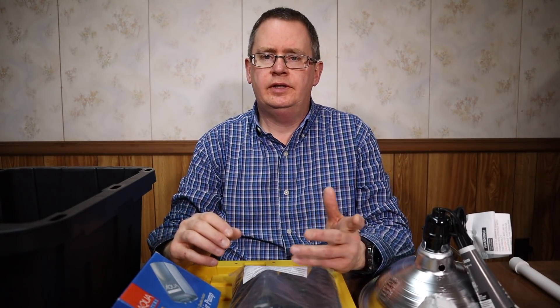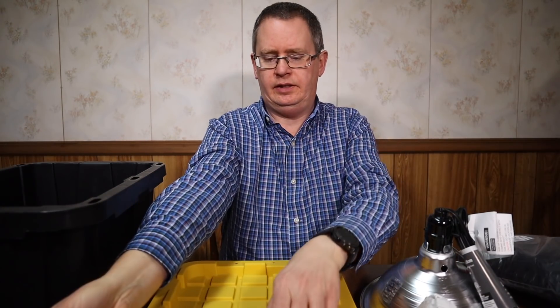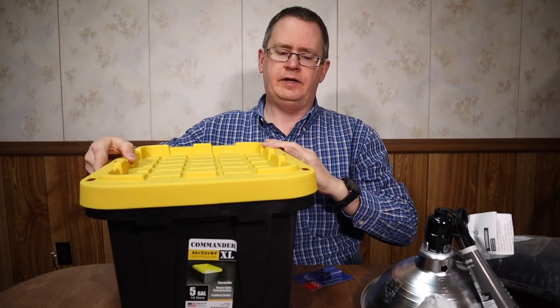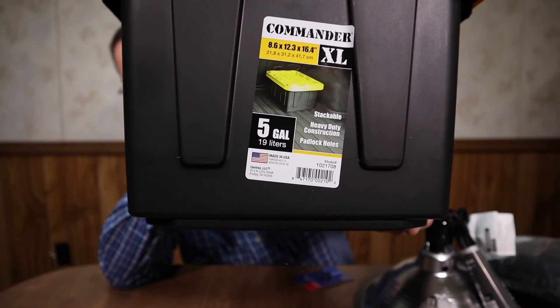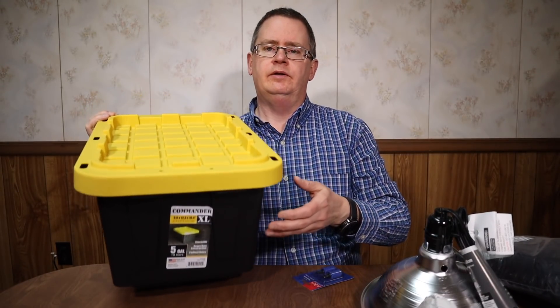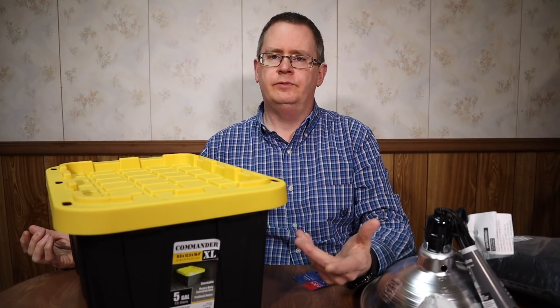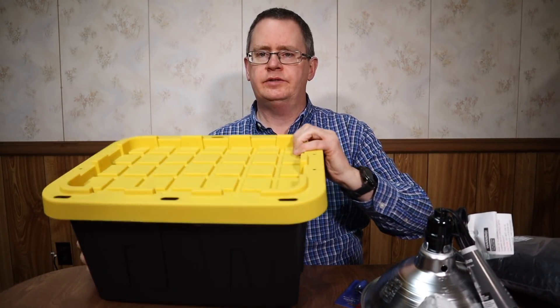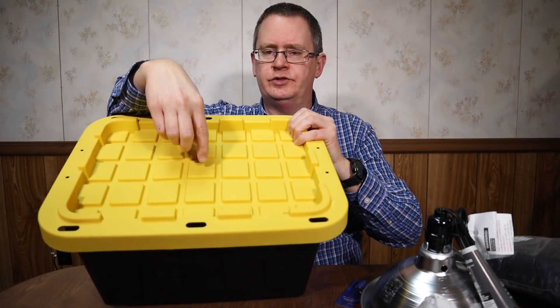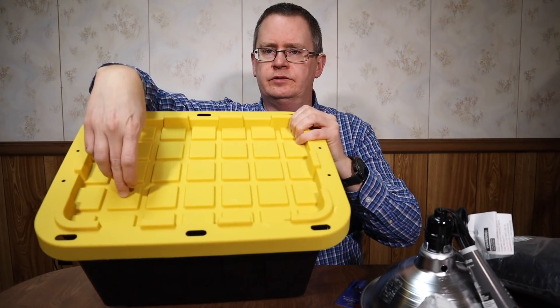This is going to work similarly to an AeroGarden but using stuff you can build yourself. I've got a tote from Lowe's, 5 gallon Ander XL. These were on sale at Lowe's the other day for $3.68. I think they're normally like $5. My plan is to put some little small 1 inch net pots over where each of these squares are.